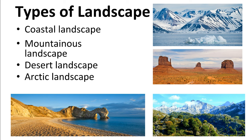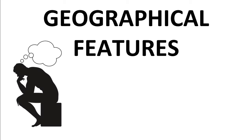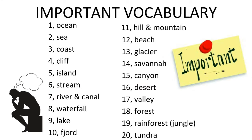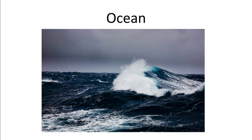Next we're going to be looking at specific geographical features. Perhaps you can have a think if you are familiar with any of those types of vocabulary. Here are the 20 pieces of vocabulary we'll be focusing on: ocean, sea, coast, cliff, island, stream, river, canal, waterfall, lake, fjord, hill, mountain, beach, glacier, savannah, canyon, desert, valley, forest, rainforest or jungle, and tundra.